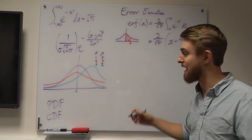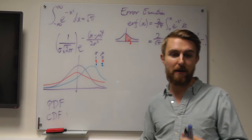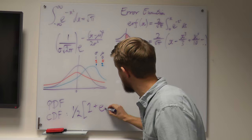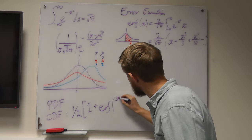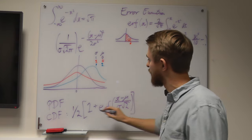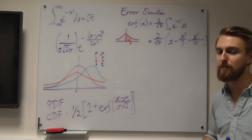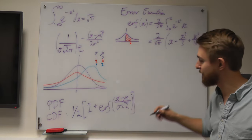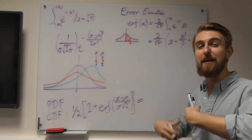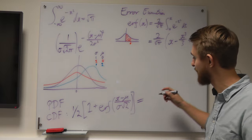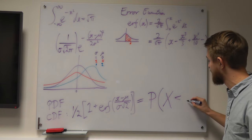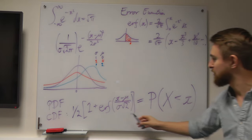For the normal distribution, the CDF is written as one half times (1 plus erf of (x minus mu) divided by (sigma root 2)). This function evaluates the area of our normal distribution from minus infinity up to our desired point x. In probabilistic terms, it gives us the probability that a random variable is less than the chosen value of x.